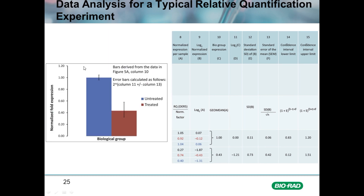On this next slide we can see all of the data from columns 8 through 15, with the resulting bar chart showing how the data is presented. We're plotting 1 for the untreated samples and 0.43 for the treated group, with the biological treatment groups on the x-axis and normalized fold expression on the y-axis.